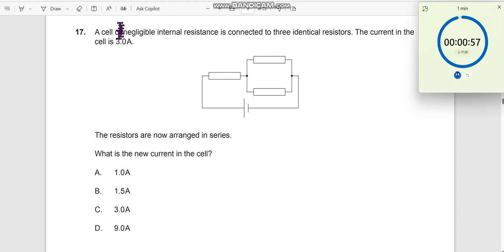Question number 17. A cell of negligible internal resistance is connected to three identical resistors. All of them are identical resistors. The current in the cell is 3 amperes.